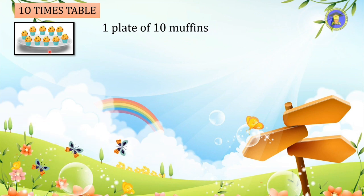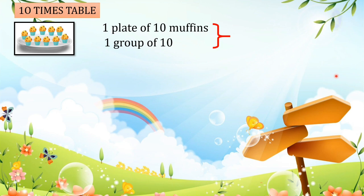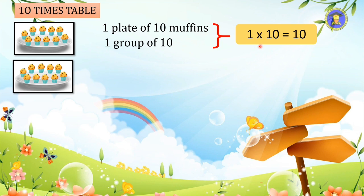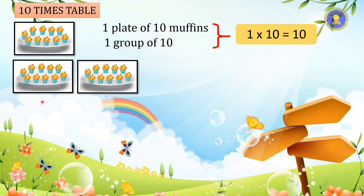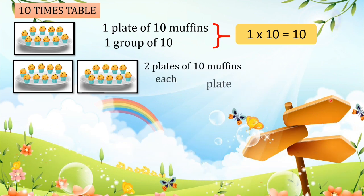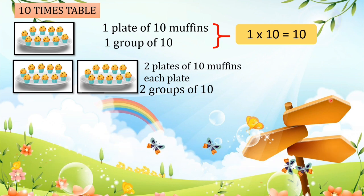Next we will look at the ten times table. Now we have one plate with ten muffins — we can say one group of ten. How many muffins altogether? We have ten muffins. One times ten equals ten.